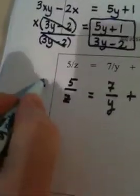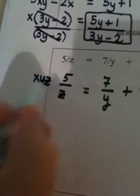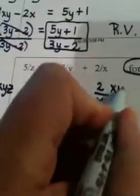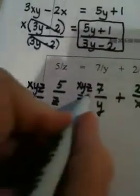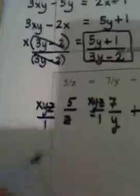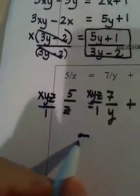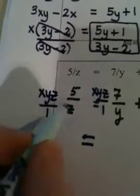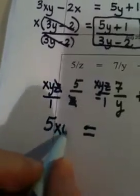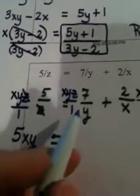Which would be xyz times xyz times xyz. So I actually multiply three times. Here's my equal sign. On this side, the z's cancel, leaving me with 5xy. Over here, the y's cancel, leaving me with 7xz.